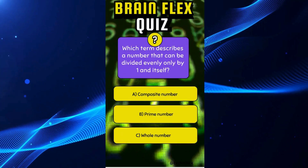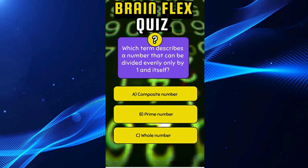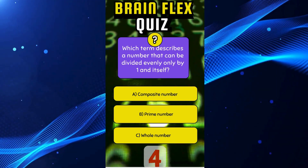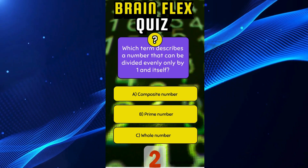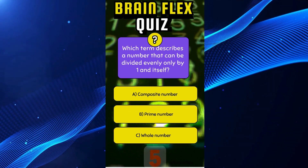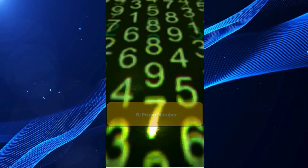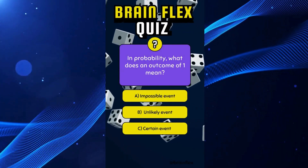Which term describes a number that can be divided evenly only by one and itself? In probability, what does an outcome of one mean?